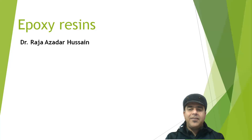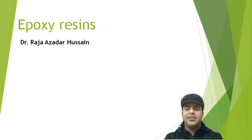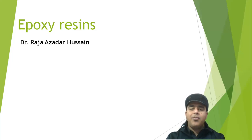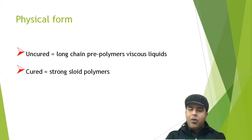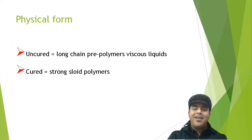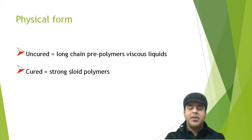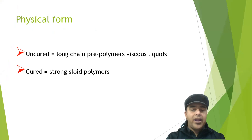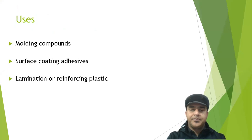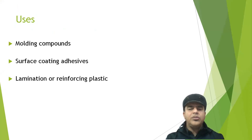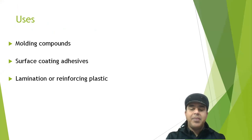In a series of lectures on safety with chemicals, today we will talk about epoxy resins. Epoxy resins may be uncured or cured. When they are uncured they are long chain prepolymers of viscous liquids, and when they are cured they are strong solid polymers. They are used in molding compounds, surface coating adhesives, and in the lamination or reinforcement of plastics.